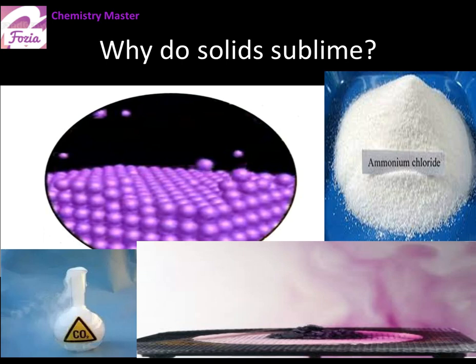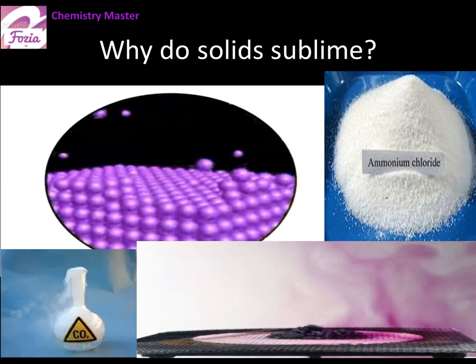Sublimes are those solids which undergo sublimation. Examples from the textbook include dry ice, which is carbon dioxide; ammonium chloride; and, as a surprise, this violet-colored solid iodine is also a sublime. So the question is: why do solids sublime? Sublimation occurs because particles at the surface of the solid have enough energy to break away from the solid and escape as a gas.